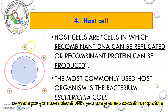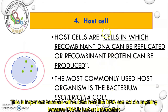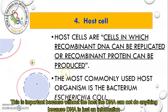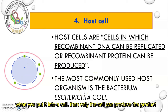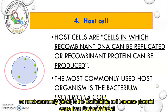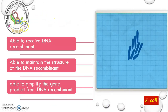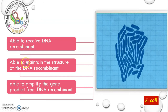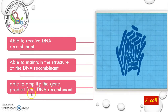When you have recombinant DNA, you can produce recombinant protein. The most commonly used host organism is the bacterium Escherichia coli. Without the host, the DNA cannot do anything because DNA is just information. When you put it into a cell, only then can the cell produce the protein product. E. coli is most commonly used because the plasmid comes from E. coli. A good host must be able to receive the recombinant DNA, maintain the structure of the recombinant DNA, and amplify the gene product from the recombinant DNA.